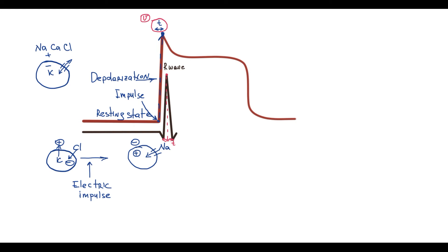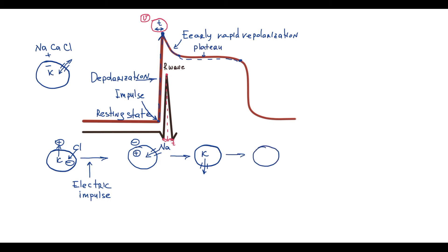After depolarization, repolarization begins. The first phase is early rapid repolarization, which occurs due to inactivation of fast sodium channels and opening of potassium channels — sodium stops entering the cell while potassium begins to flow out. After early rapid repolarization there is a plateau phase, in which potassium still exits the cell but calcium channels open and calcium enters the cell by concentration gradient. This plateau phase is approximately 20 times longer than the depolarization phase and is a distinctive feature of cardiomyocytes, as it is substantially shorter in nerve tissue and skeletal muscle. On ECG this phase is represented by the ST interval.